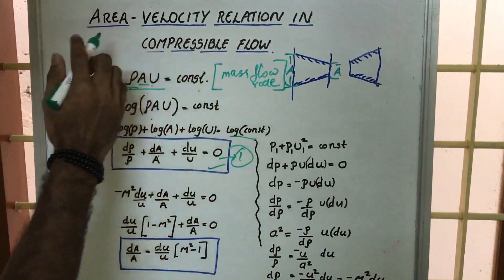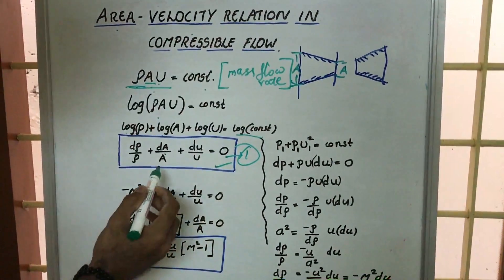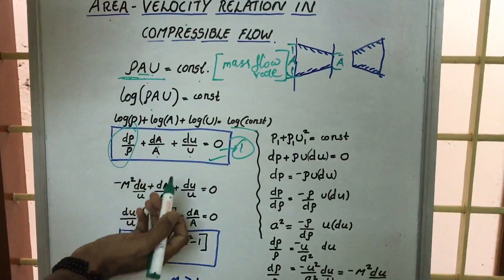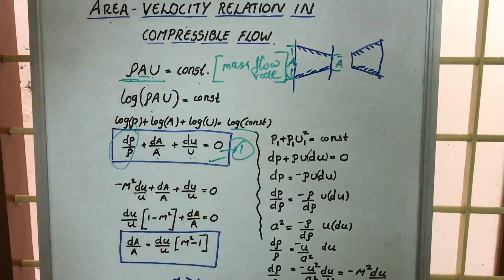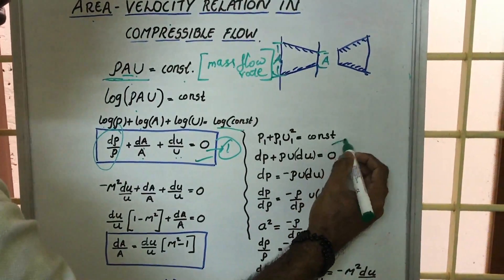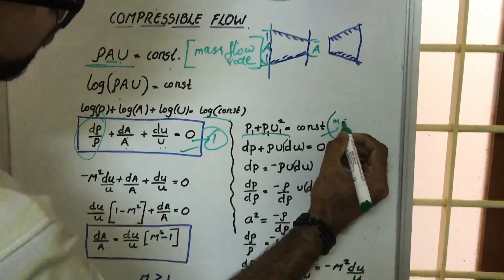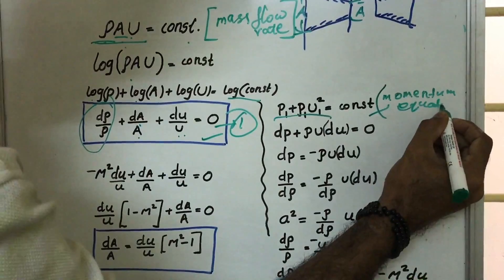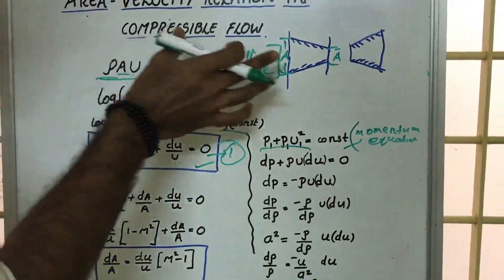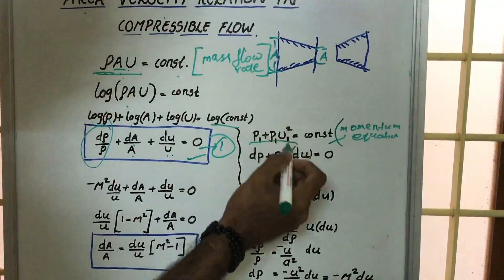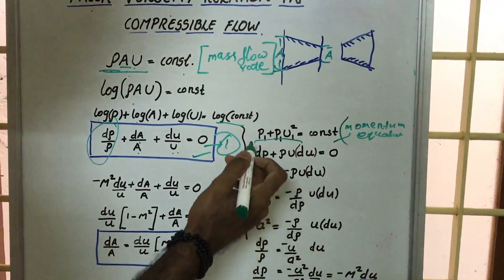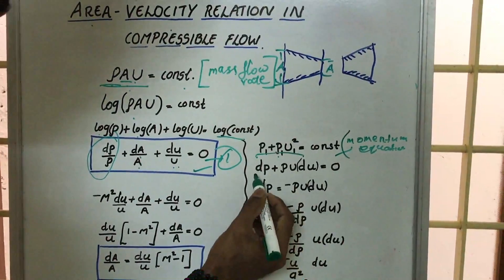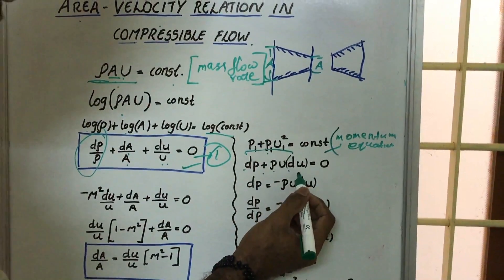We need the relationship between area and velocity. The area term and velocity term are present, but we have to convert the dρ/ρ term into either dA/A or du/u. For that, we consider the momentum equation — this is the second fundamental equation for compressible fluid. Here p plus ρu² equals a constant, where p is the pressure, ρ is the density, and u is the velocity. Differentiating gives dp plus ρu·du equals zero.